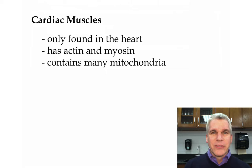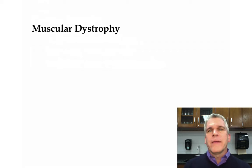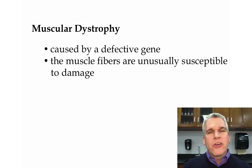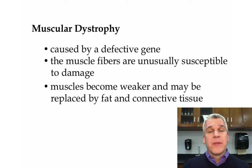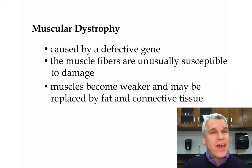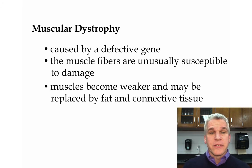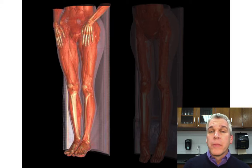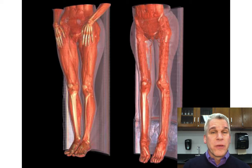The last thing we want is fatigue setting in in our heart — we don't call it cardiac muscle fatigue, we call it a heart attack. One disorder I want to briefly discuss is muscular dystrophy. Muscular dystrophy is caused by a defective gene, and the muscle fibers are unusually susceptible to damage. Over time the muscles become weaker and weaker, and instead of being replaced by new muscle tissue, it is replaced by fat or connective tissue. Here you can see on the screen a normal musculature compared with the musculature of a person with muscular dystrophy, showing how much muscle tissue is actually gone. As of right now, there is no known cure, but when you're talking about genetic diseases, there are always new advancements happening on a daily basis.